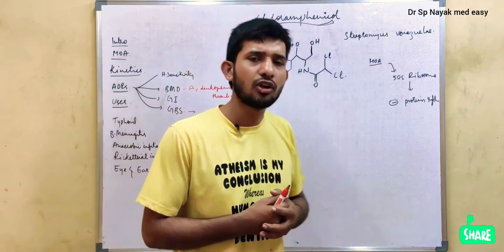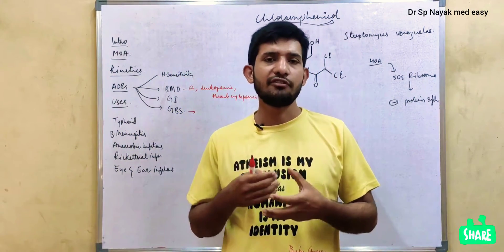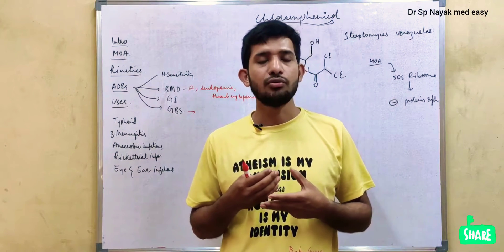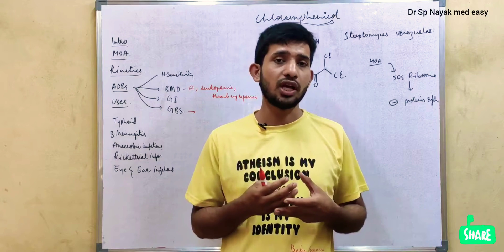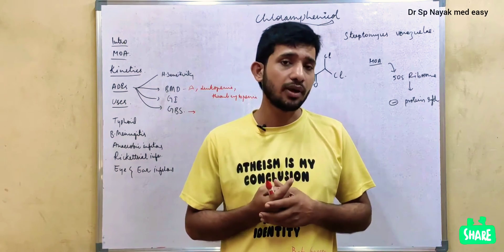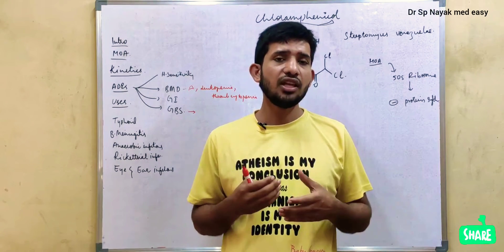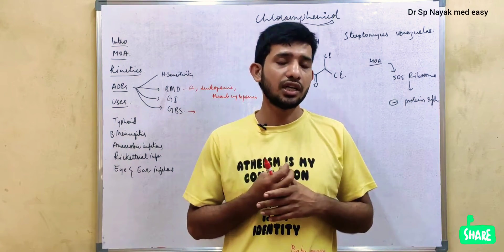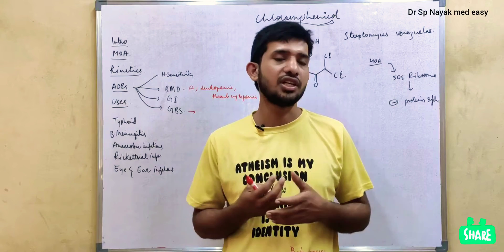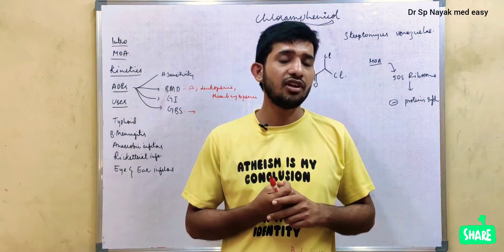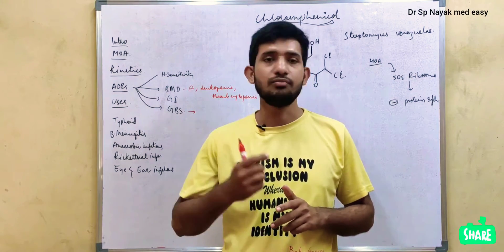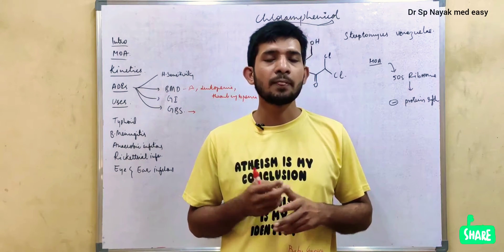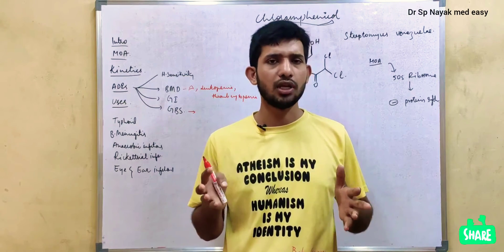Chloramphenicol is a broad spectrum antibiotic which is very effective on gram positive, gram negative, anaerobes, aerobes, and it is also effective on some parasites. Even though it is having major antibacterial property, it is not clinically used because of its adverse drug reactions. It is having a very severe adverse drug reaction, and that is bone marrow suppression. Because of that lethal adverse drug reaction, we don't use chloramphenicol most commonly.